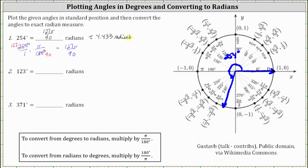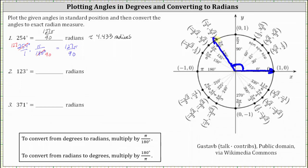For number two, we have 123 degrees. In standard position, the initial side is along the positive x-axis. I rotate counterclockwise 123 degrees — one-fourth of a rotation counterclockwise is 90 degrees, so we need to rotate 33 more degrees counterclockwise, which brings us to approximately here, just past 120 degrees. This is the angle 123 degrees in standard position.